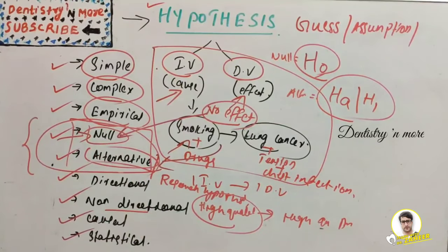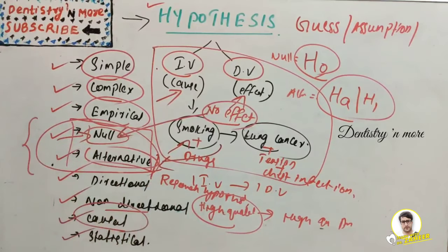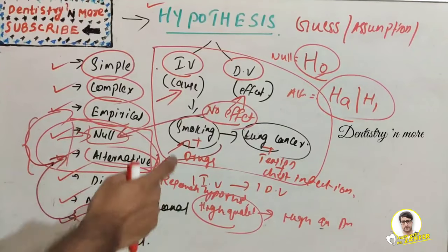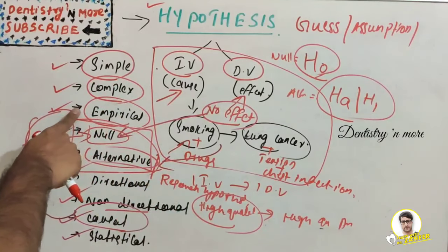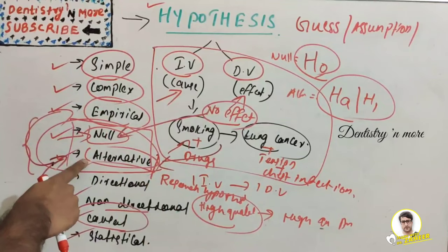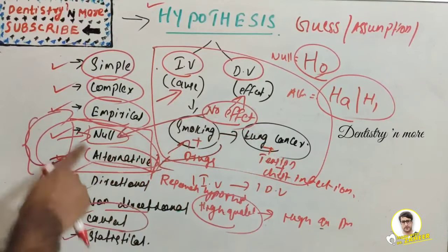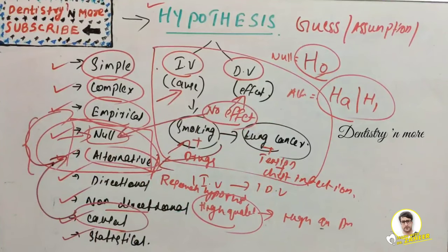Causal hypothesis involves causality — for example, smoking causes lung cancer. It predicts a cause-and-effect relationship between the independent and dependent variable. This causal relationship is again an alternative hypothesis and also an empirical hypothesis because it is claiming that one thing causes another. To make that claim, we need evidence, making it empirical. And since it says there is an effect, it also becomes alternative hypothesis.